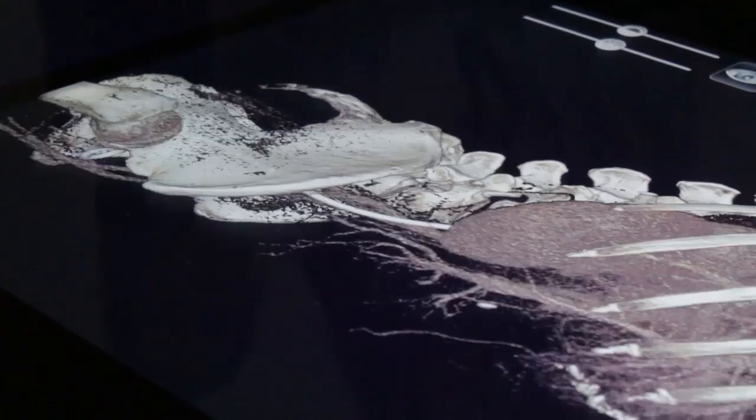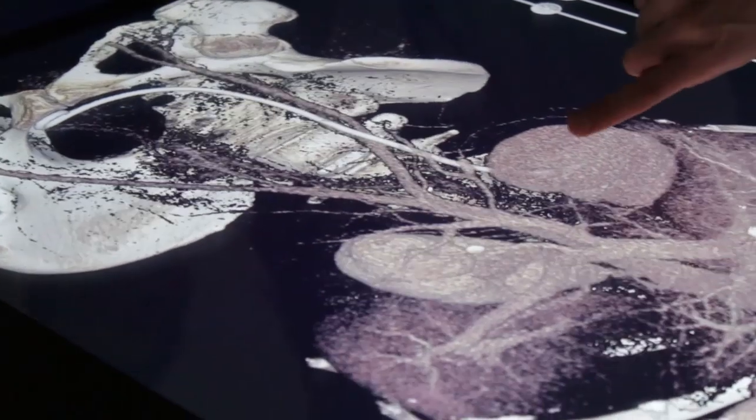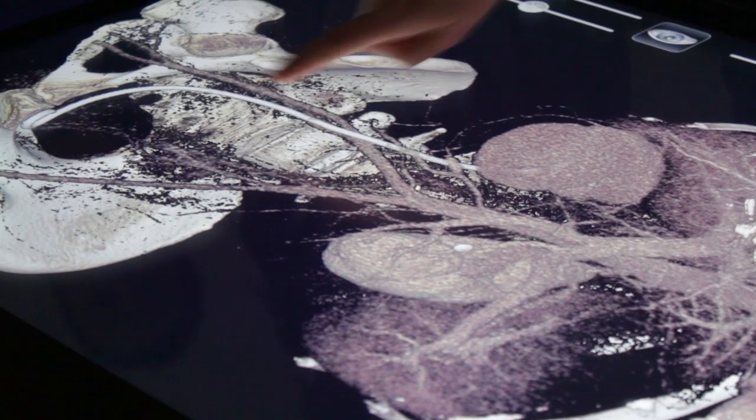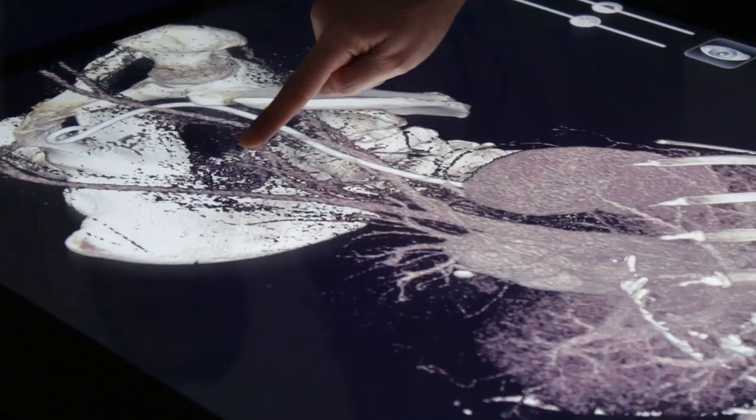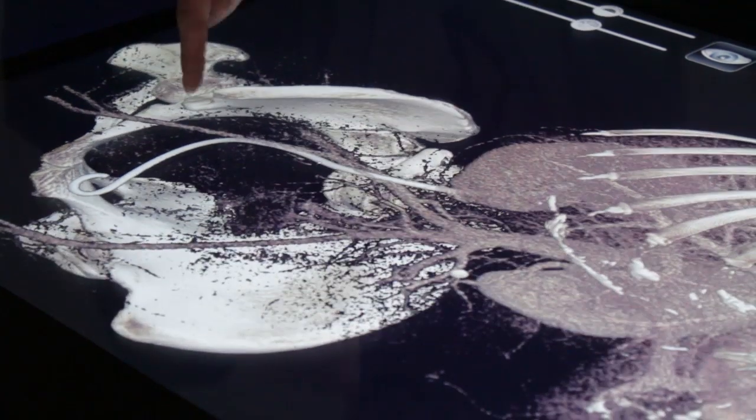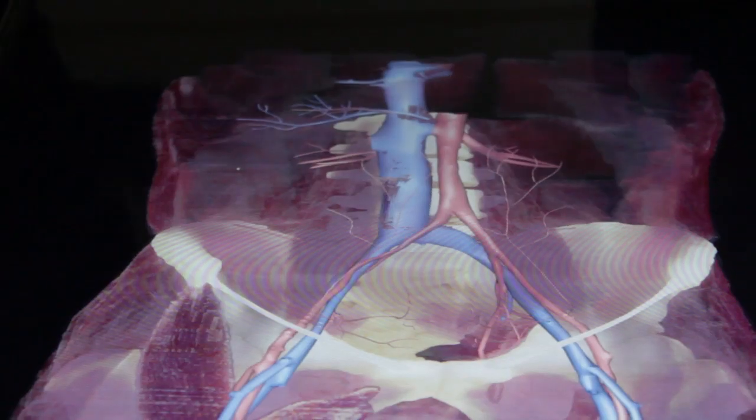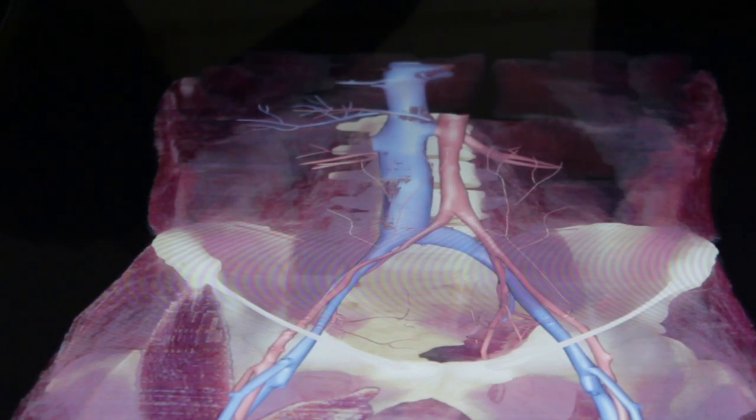The Anatomage Table is really cool. It's great fun to put what we've been learning in the classroom into a more clinical context. With the electronics, you can zoom and look around and feel that you're learning a lot more and putting what you've already studied in place within the human body.